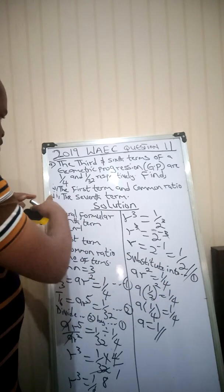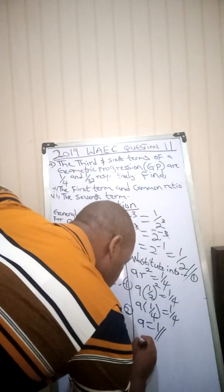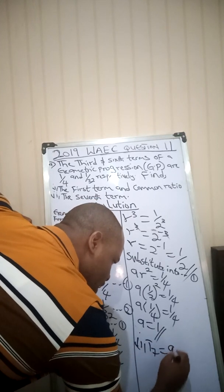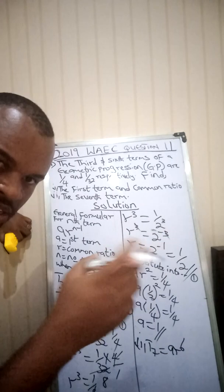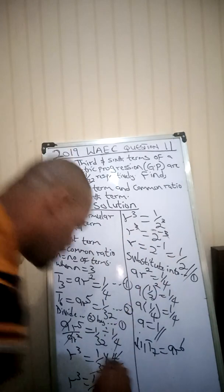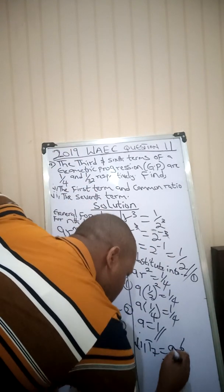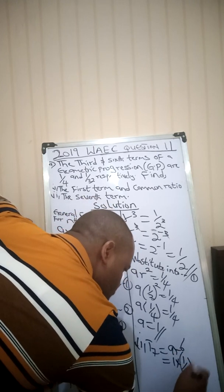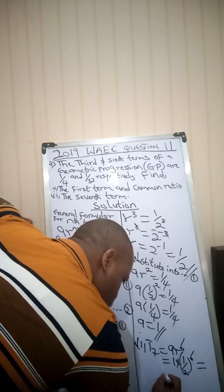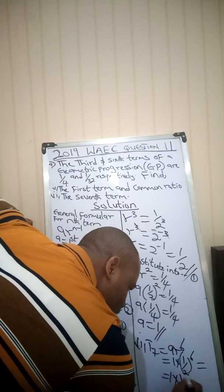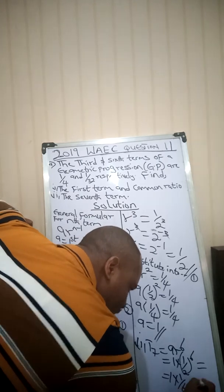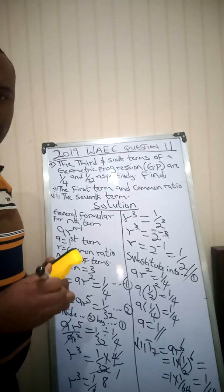We've got first term a = 1 and common ratio r = 1/2. The next thing is the seventh term. T7 = ar^(7-1) = ar⁶. So T7 = 1 × (1/2)⁶ = 1/64, since 2⁶ = 64. That is our seventh term.